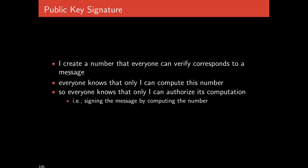A public key signature works by creating a number — effectively a bit string — that everyone can verify corresponds to a message, and everyone knows that only I can compute this number, which means only I can authorize its computation. By virtue of computing it, I am in effect signing that original message.